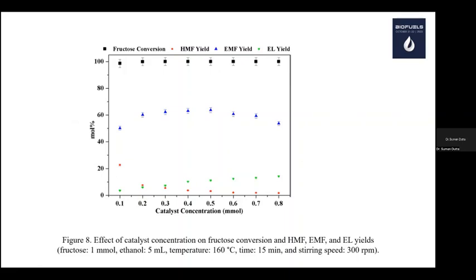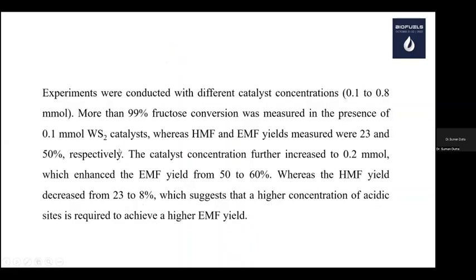Regarding the effect of catalyst concentration: increasing catalyst concentration gives almost the same fructose conversion. EMF yield initially increases then decreases, HMF yield decreases, and EL yield increases slightly. Overall, catalyst concentration has very little effect on this reaction. As small as 0.1 mmol is sufficient — even at this level, almost 90% conversion is achieved.